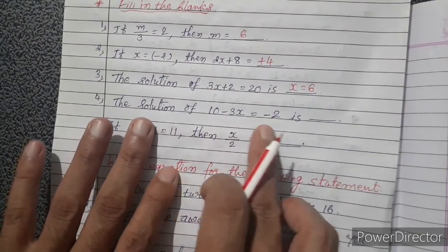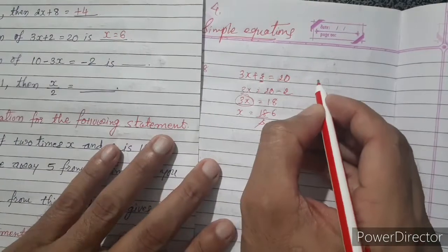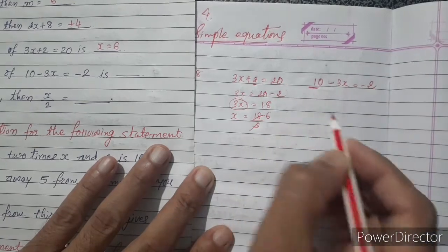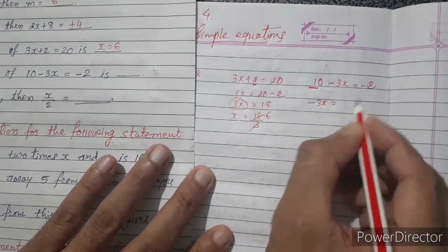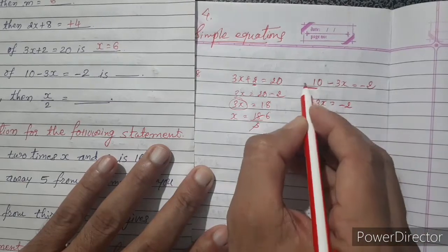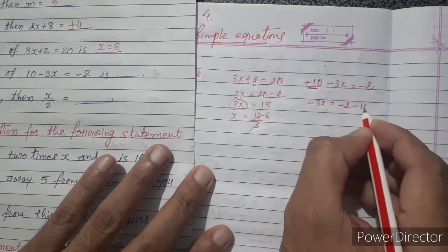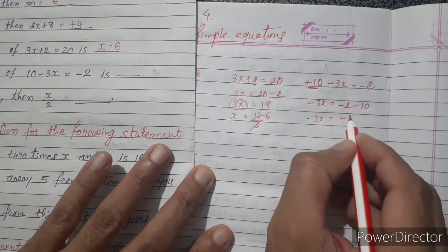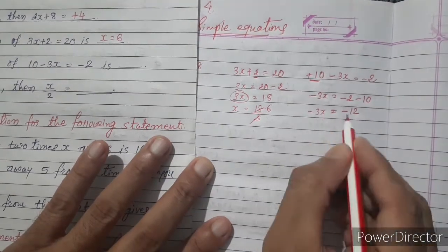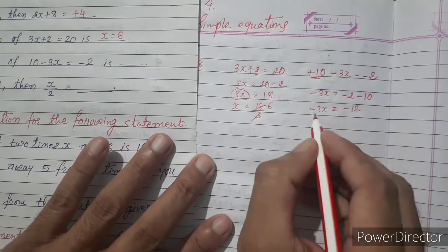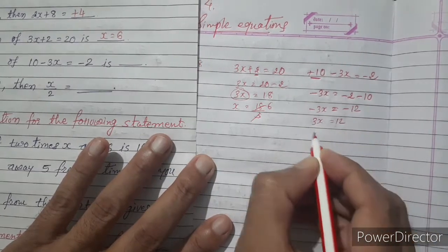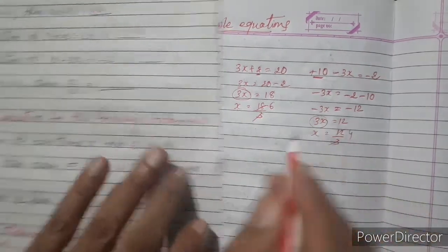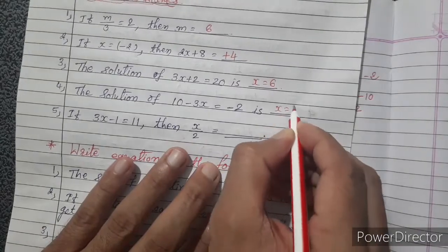The solution of 10 minus 3x equals minus 2. We change the side of 10: minus 3x equals minus 2 minus 10. Sign of the biggest number is minus, so minus 3x equals minus 12. Both sides have minus, so we change the sign: 3x equals 12, meaning x equals 12 divided by 3, so x equals 4.